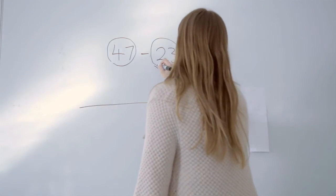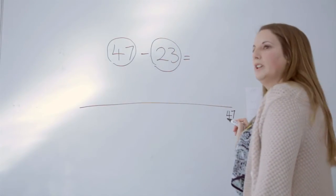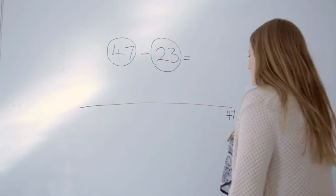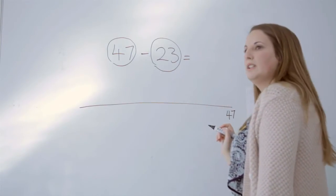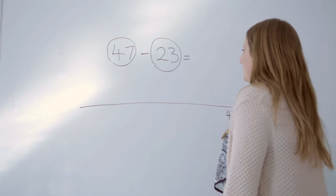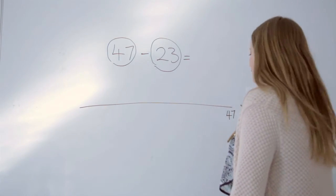They look at the number they are taking away and break it down into the tens and units. So rather than taking 23 away in one go, they will break it into the tens and the units.